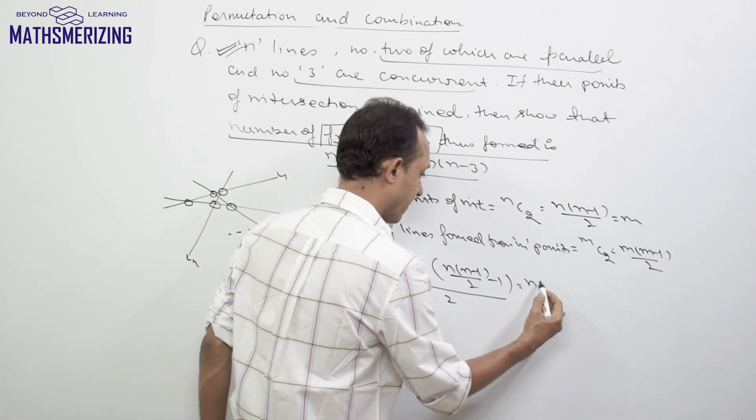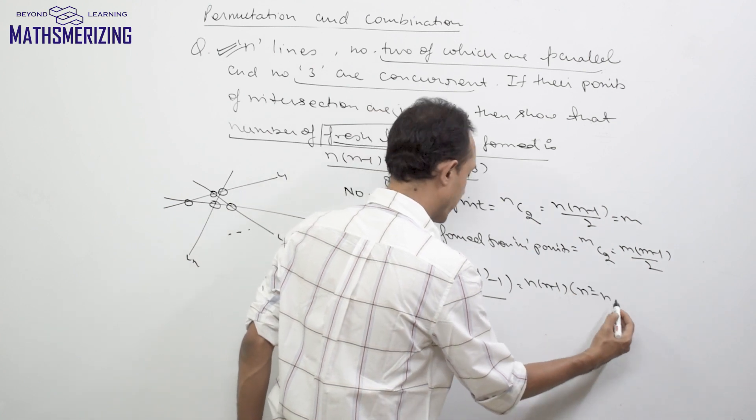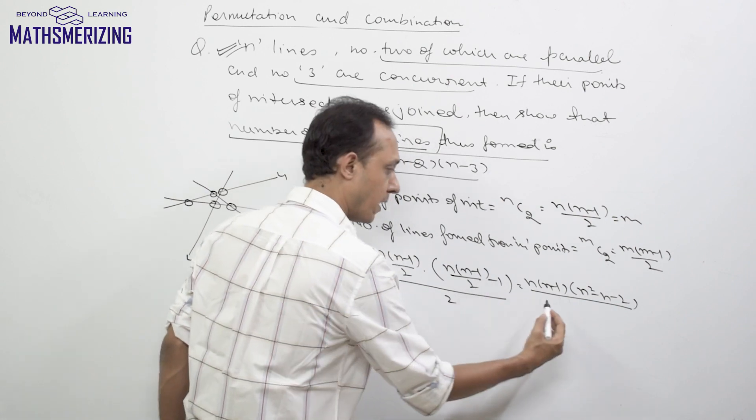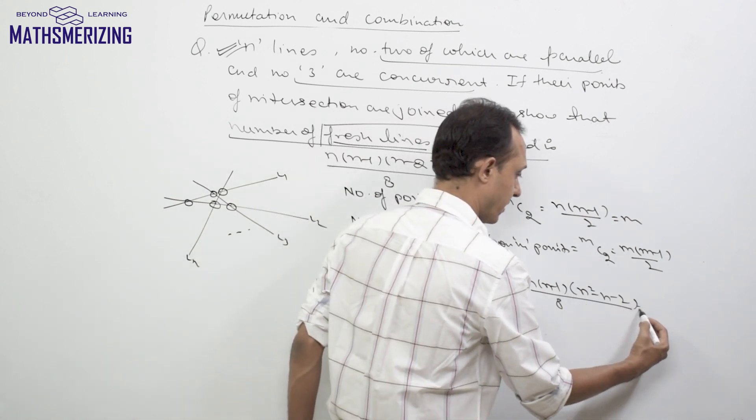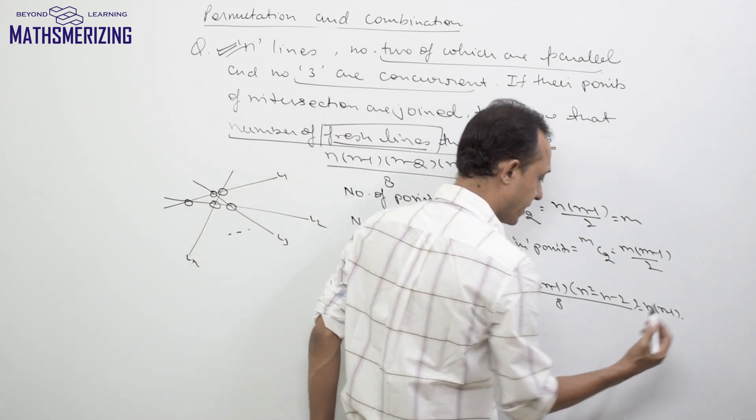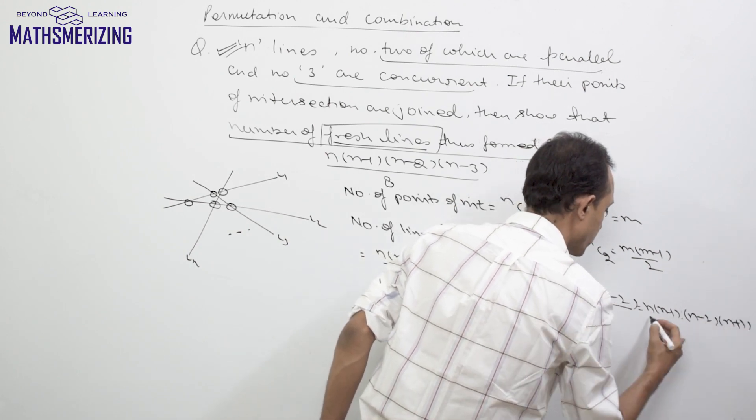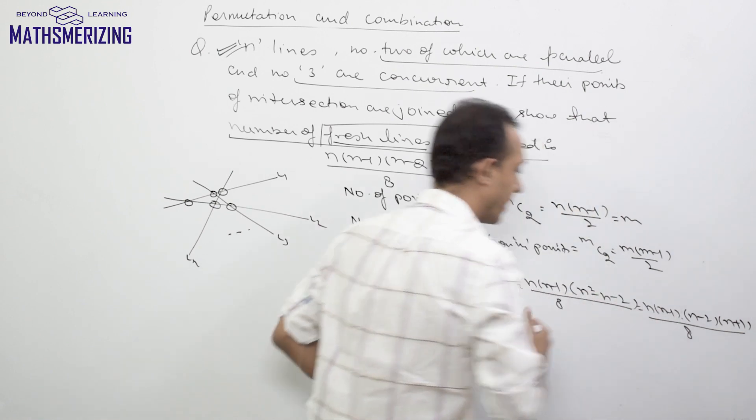This will be n(n-1), and here will be n² - n - 2 divided by 8. So it will be n(n-1)(n-2)(n+1) divided by 8.